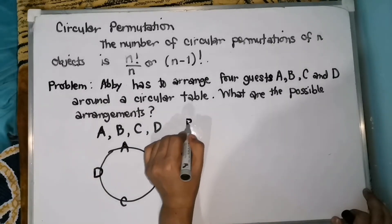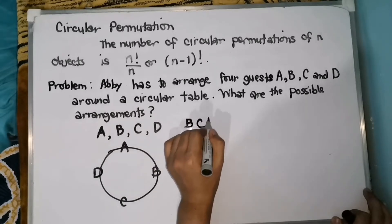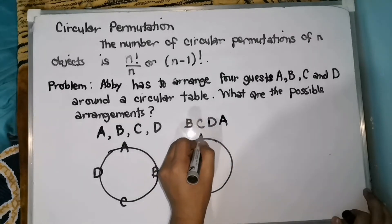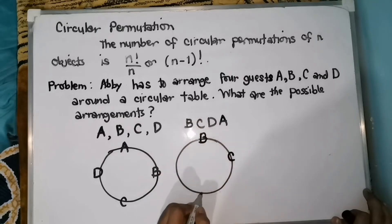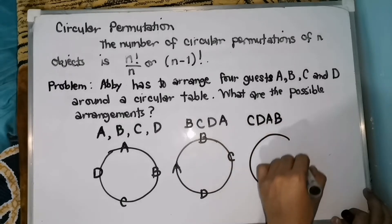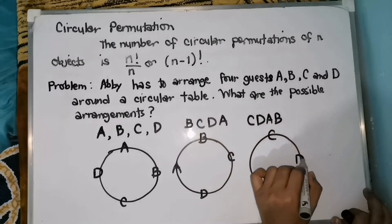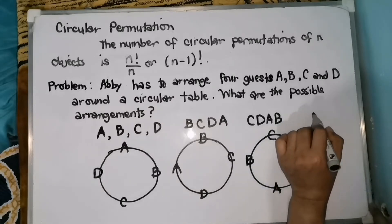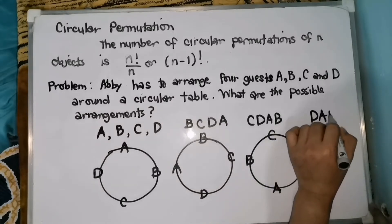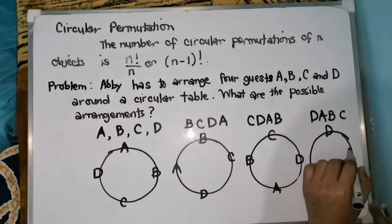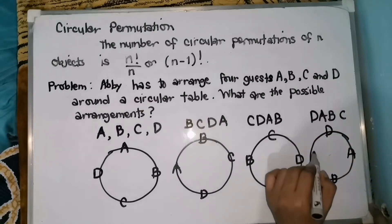Another one. Let's start with B, C, D, A — so we have here B, C, D, A. Let's start with C — C, D, A, B — so we have here C, D, A, B. Let's start with D — D, A, B, C — so we have here D, A, B, and C.